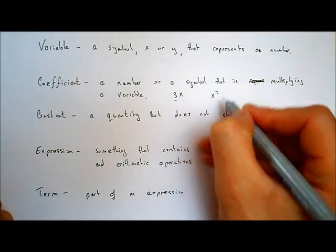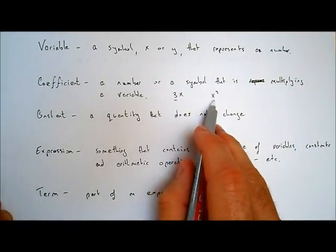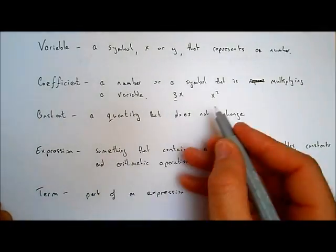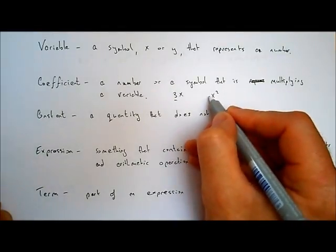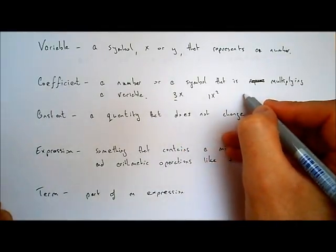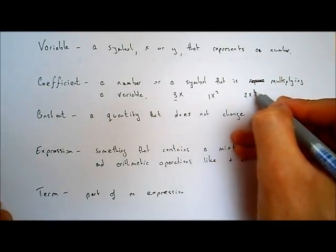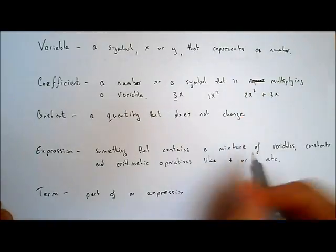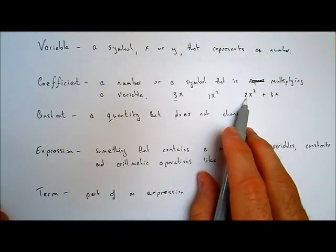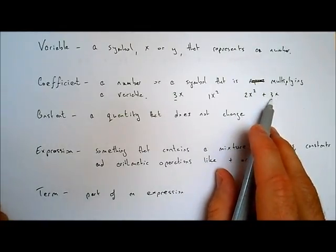If I write down x squared, the coefficient of x squared — think about it — what's the number that's multiplying x squared? It's 1, because x squared is the same as 1x squared. Or if I write down 2x squared plus 3x, I would say the coefficient of x squared is 2, and the coefficient of x is 3.